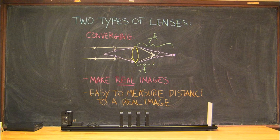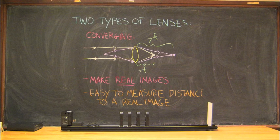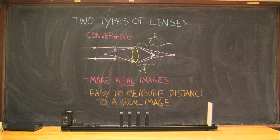It's easy to measure the distance to a real image since you can put a screen at that point and see the image in focus. This will make it easy to find the focal length of a converging lens.